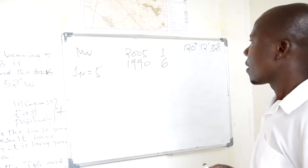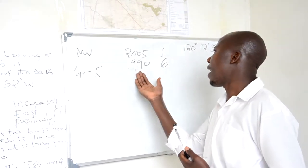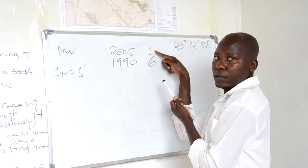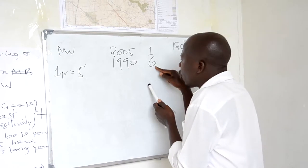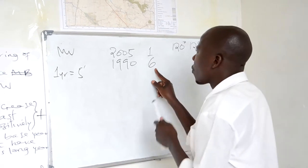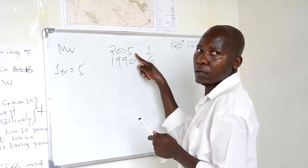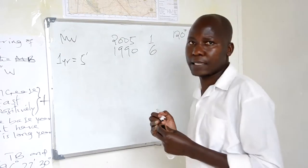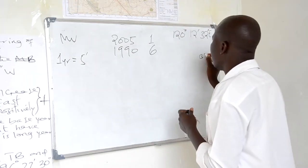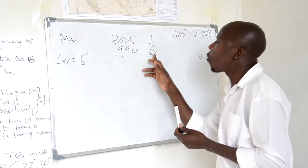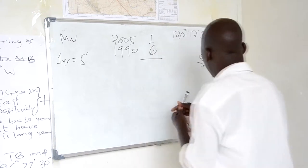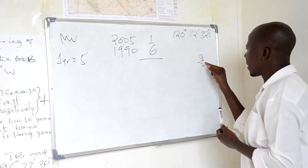June minus January, or 6 minus 1, will be possible. But we also account for the year borrowing. We have to take 1 year, which is equal to 12 months. 12 months plus 1 will be 13. 13 months minus 6 months will be 7 months.